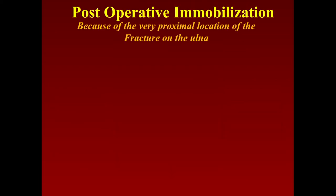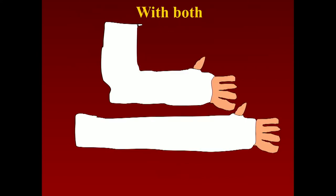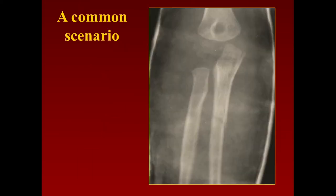Postoperatively, it's very difficult because of the proximal location to put three-point pressure on the olecranon — it's very proximal. You've got the radial head there and it's very difficult. We've tried both with flexion and extension casts, and it's very difficult to do this non-operatively.